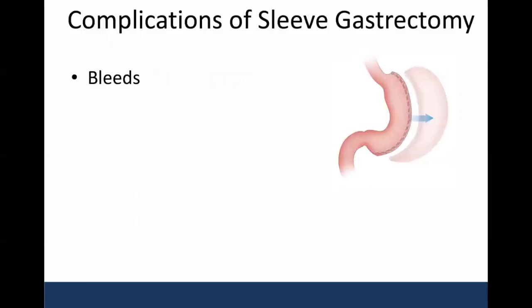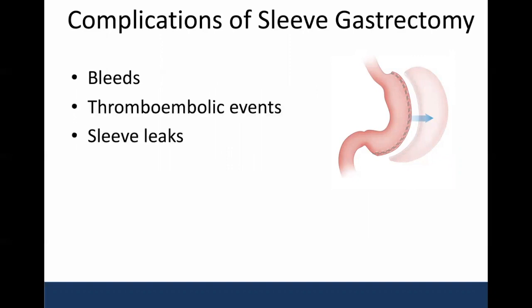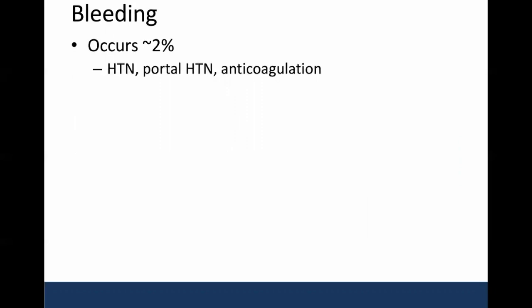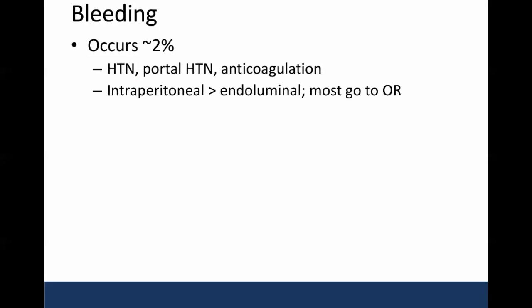The complications that I was asked to address today include bleeds, thromboembolic events, and sleeve leaks. We are going to spend the majority of the talk discussing leaks, but we will start with bleeds. Bleeding occurs in approximately 2% of patients following sleeve gastrectomy, and rates are higher if the patient has a history of hypertension, portal hypertension, or is on anticoagulation therapy. The bleeding can be intraperitoneal or endoluminal, and when treatment is required, most of the time these patients end up going back to the OR.